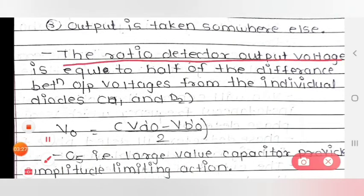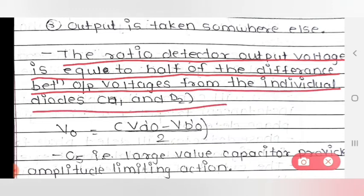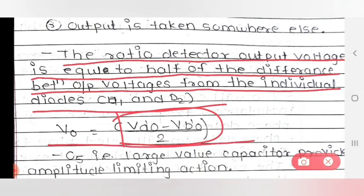The ratio detector output voltage is equal to half of the difference between the output voltages from the individual diodes D1 and D2. The output voltage V0 equals (V_A0 minus V_B0) divided by 2, where V_A0 and V_B0 are the voltages across individual diodes D1 and D2 respectively.